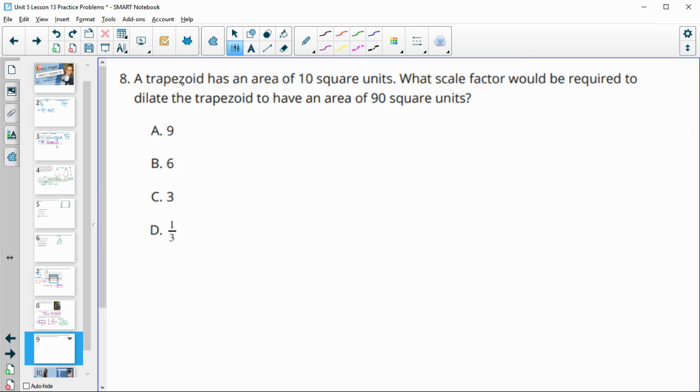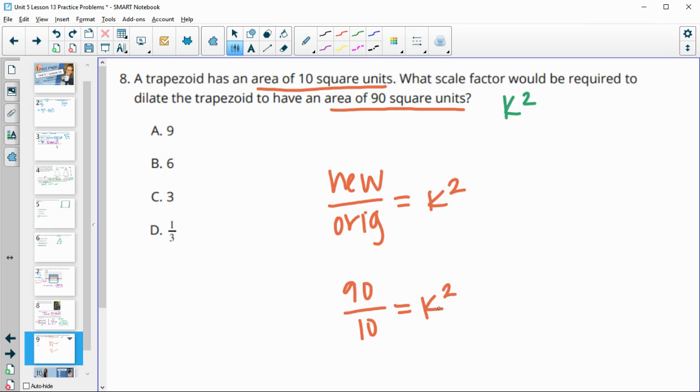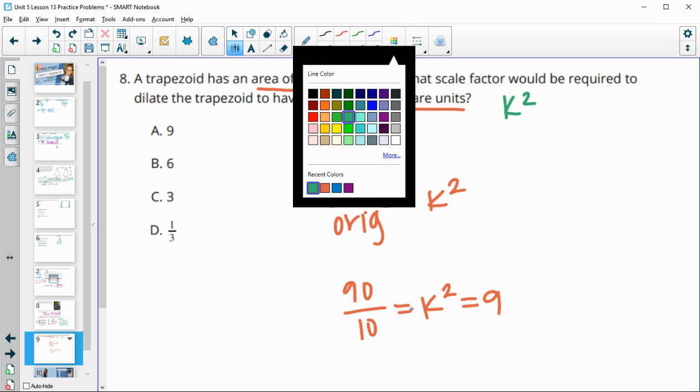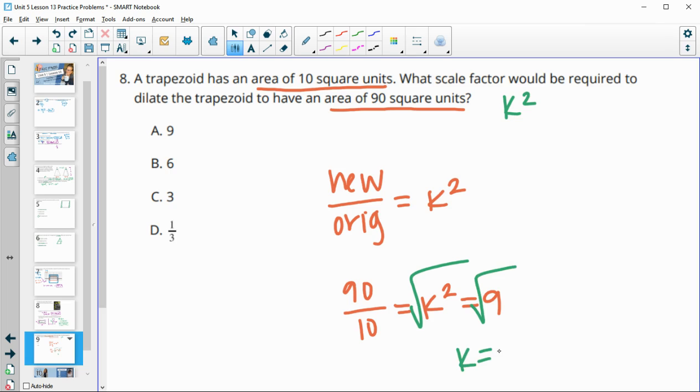Number eight. A trapezoid has an area of ten square units. What scale factor would be required to dilate it to have a new area of ninety? And remember when we're doing area, scale factors, when we compare areas, they're going to give us back a k squared. So we'll do new area over original area, and that's going to equal our k squared. So our new area is ninety over our original area is ten. And ninety divided by ten is nine. That's our k squared. So then when we square root that, we'll get our scale factor of three.